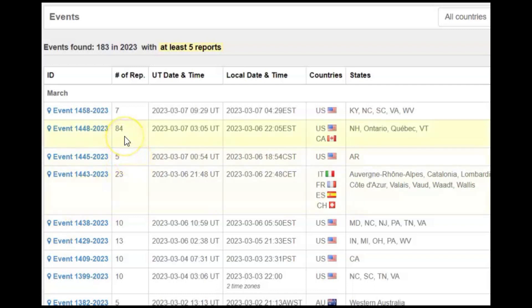There was 84 reports of a fireball seen over Ontario, Quebec, Vermont and New Hampshire, I believe. And that one did fragment. Also yesterday, there was five reports from Arkansas.